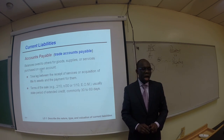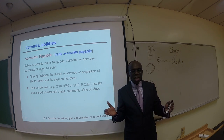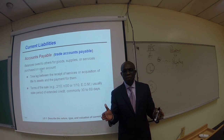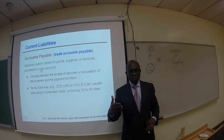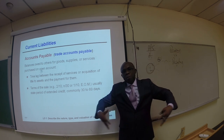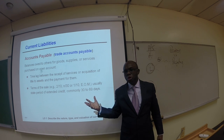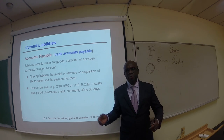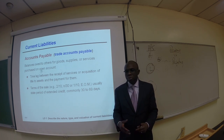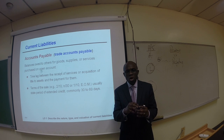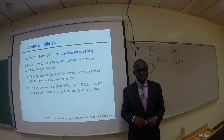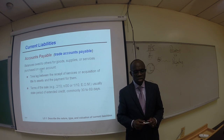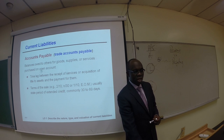The first example of a current liability is accounts payable, also called trade accounts payable. Accounts payable consists of balances owed to others for goods, supplies, or services purchased on account. For example, if a company buys office supplies regularly without paying immediately, that results in accounts payable. Key credit terms such as 2/10, net 30 mean a 2% discount if paid within 10 days, or the full balance is due in 30 days.